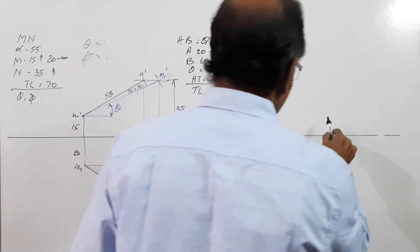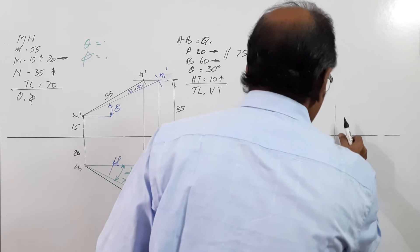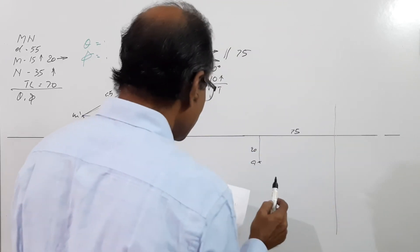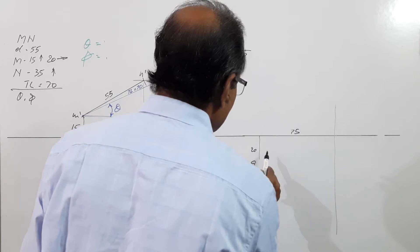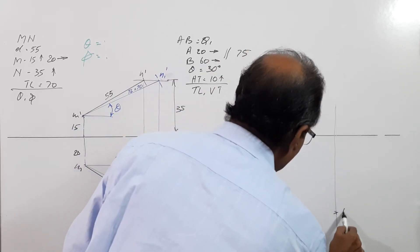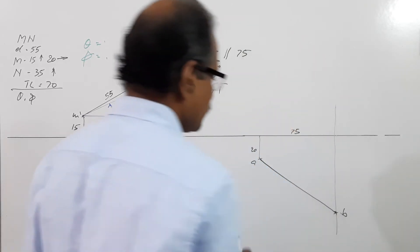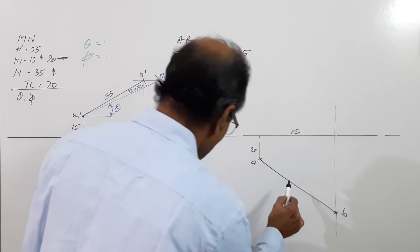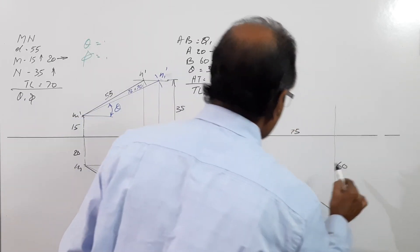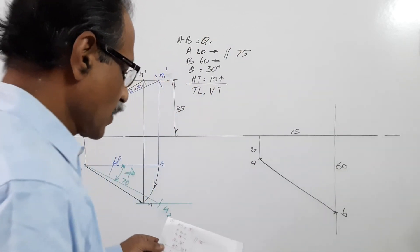Locate A as 20 mm in front. 75 mm away, draw a projector — this is 75. On that projector, 60 mm below locate B. So AB is the plan of the line. This is 20, this is 60, and this is the plan.